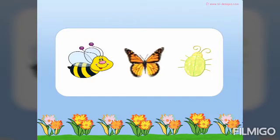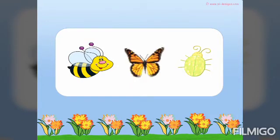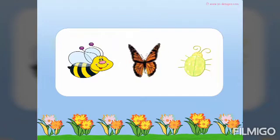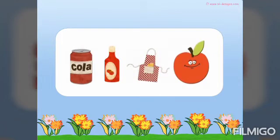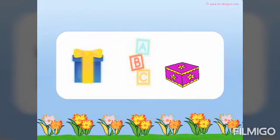These pictures are animals with wings. These objects are found in the kitchen. Another set — they are arranged according to their shape.